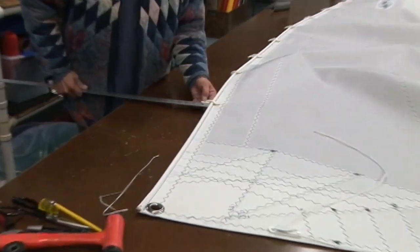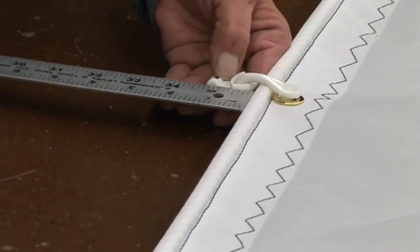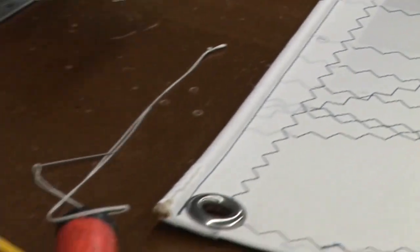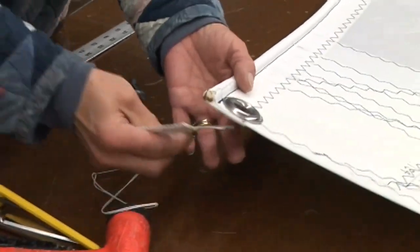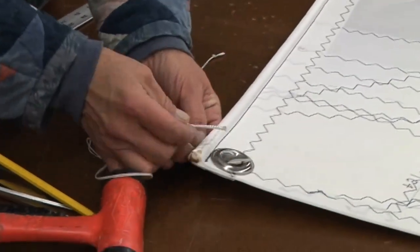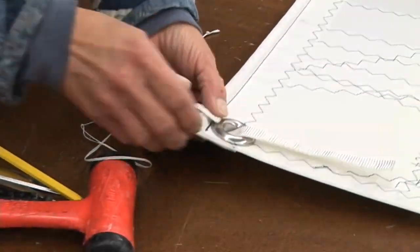If you've requested a coated outhaul slug, we'll show you how to install it now. We're measuring how far out the slugs come from the bolt rope. This sail includes a coated outhaul slug and we'll show you how to install that at the clew next.